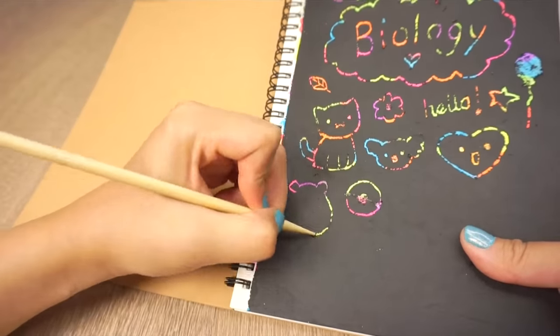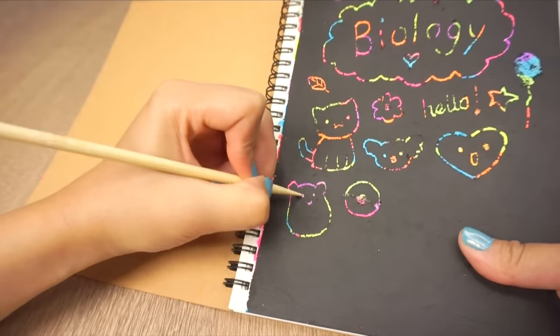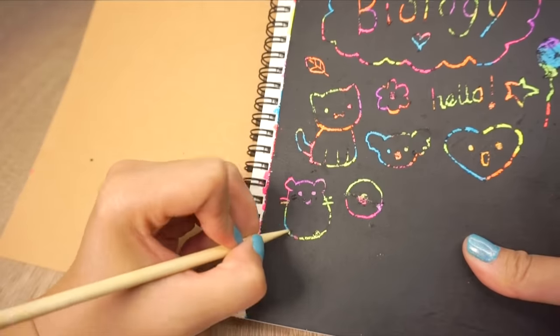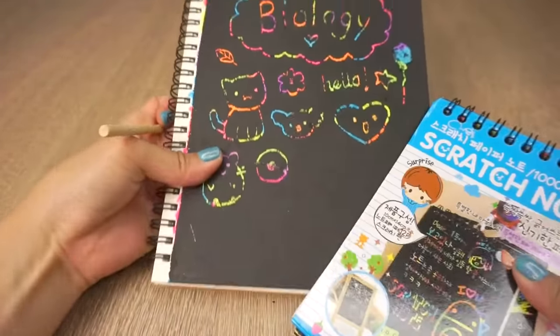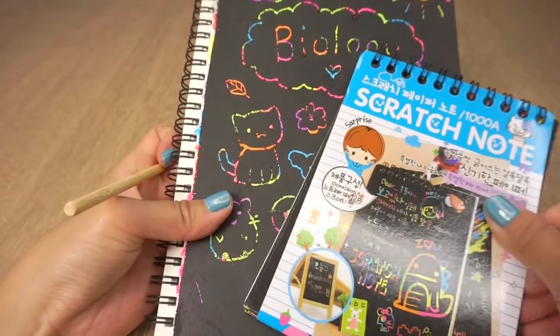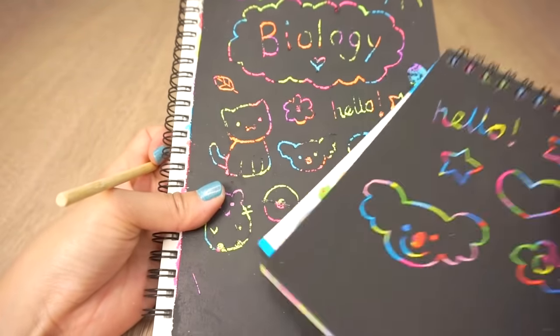This DIY version worked surprisingly well however I noticed that the black layer didn't scratch off as smoothly as the store-bought notepad. This is why it's important to make sure the page is covered with wax crayon because the wax really helps the paint slide off.